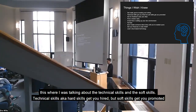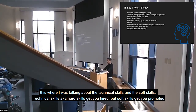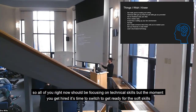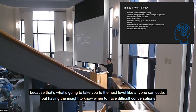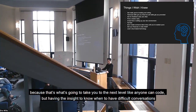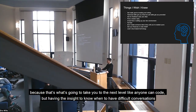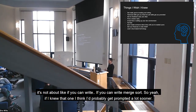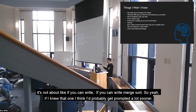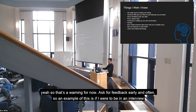This is where I talk about the transition between technical skills and soft skills. Technical skills — aka hard skills — get you hired. Soft skills get you promoted. So all of you right now should be focusing on technical skills. But the moment you get hired, it's time to switch — it's time to get ready for the soft skills. That's what's going to take you to the next level. Anyone can code. But having the insight to know when to have difficult conversations, manage risks, take initiative on certain things — having those leadership qualities is intangible. That's what gets you noticed. That's what will be in the promotion document. If I knew that, I think I probably would have gotten promoted a lot sooner.